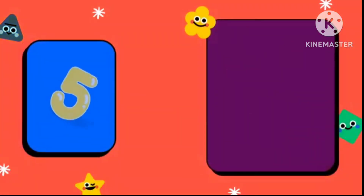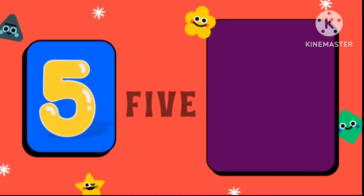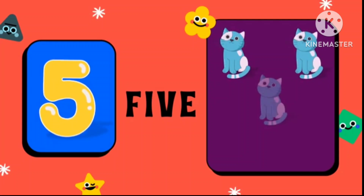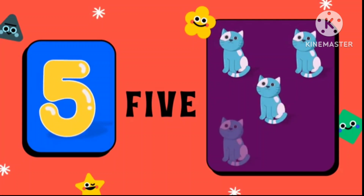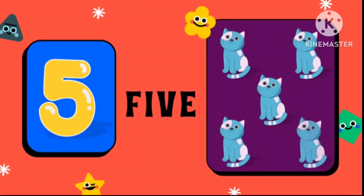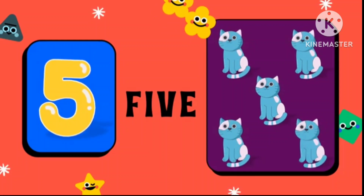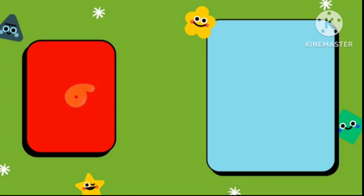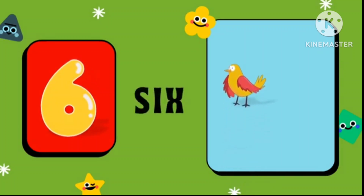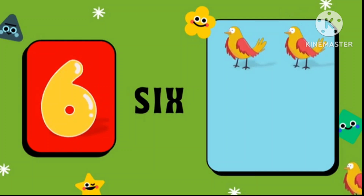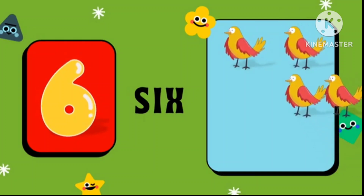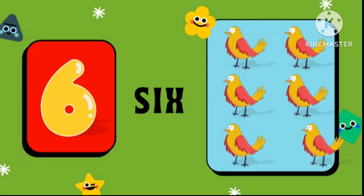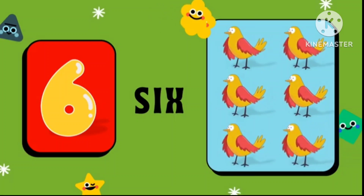Number 5, F-I-V-E. 1, 2, 3, 4, 5 — 5 cats. Number 6, S-I-X. 1, 2, 3, 4, 5, 6 — 6 birds.